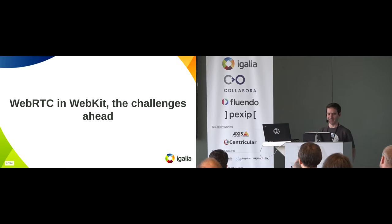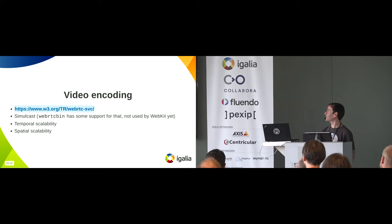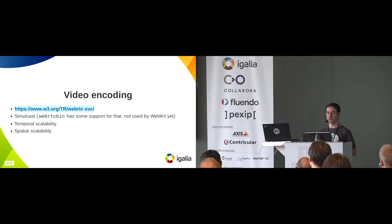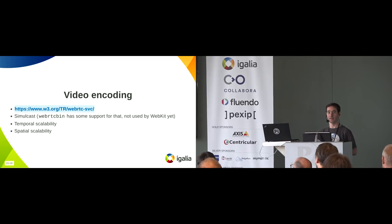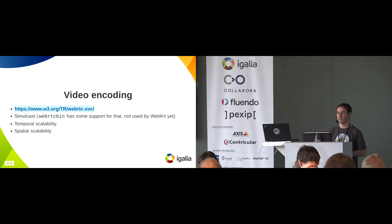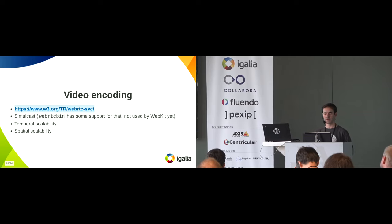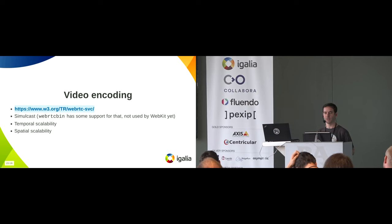What are the challenges? Regarding video encoding, we could use some improvement in our encoder story. There's a spec called WebRTC SVC for simulcast encoding. Not all encoders support those capabilities such as temporal and spatial scalability — I think it's supported in VP8, VP9, and AV1. We'll need to see how to integrate that into our encoder. It hasn't been started yet, it's on our to-do list, but some platforms require it and it's going to be important for the future.